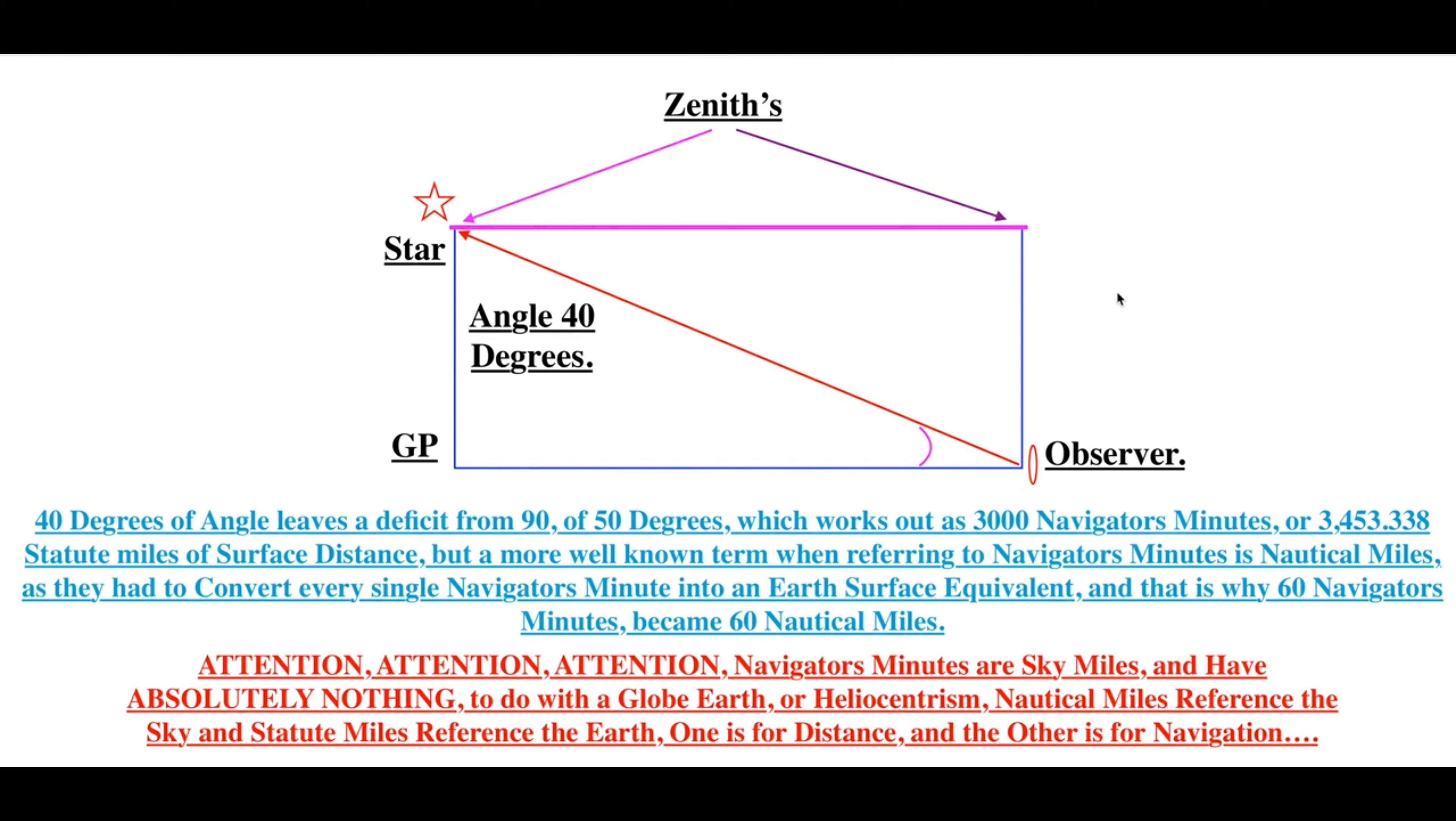40 degrees of angle leaves a deficit from 90 of 50 degrees, which works out as 3000 navigators minutes or 3,453.338 statute miles of surface distance.